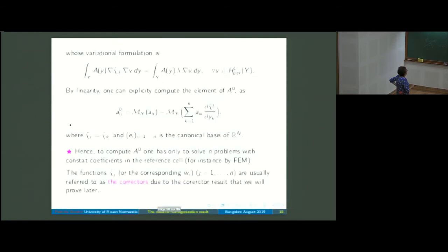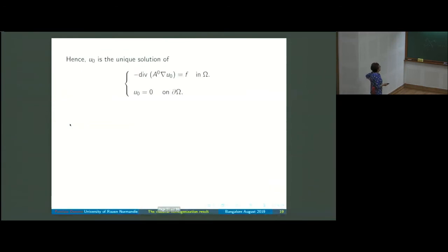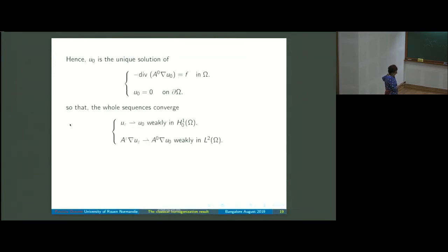The functions χ_j are also called correctors because they correct the convergence. Once ξ_0 is identified, u_0 is the unique solution of the limit problem, and since the limit is unique the whole sequence converges — not just a subsequence.